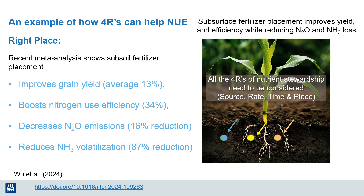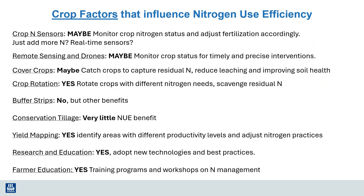So we're back again talking about implementing the 4R principles of nutrient stewardship — using the right source, at the right rate, putting it in the right place, and at the right time. These are some initial thoughts to guide practices that might have the most potential for improving nitrogen use efficiency on the farm. I won't have time to discuss all of these now, but I would appreciate hearing your perspective and experiences.